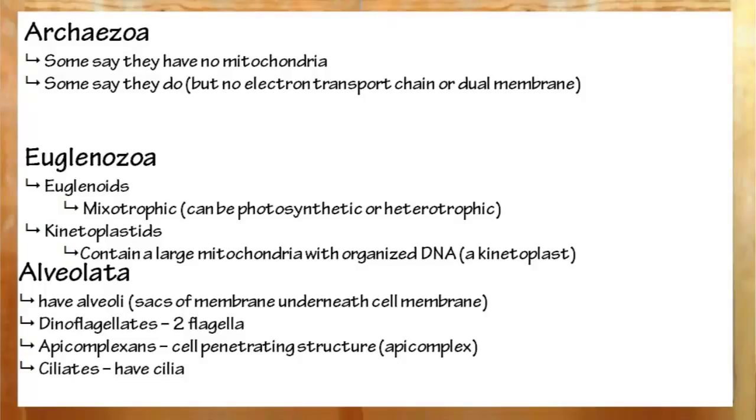Now, the oldest of all forms of the protists is the archozoa. Some say they don't have mitochondria. Some say they do. Those that say they do point to structures with no electron transport chain, no membrane, and no DNA. If these do have mitochondria, they are heavily modified.